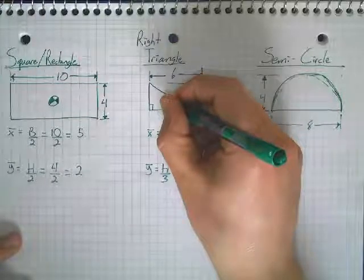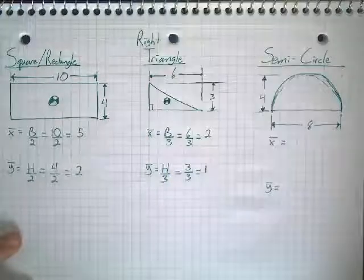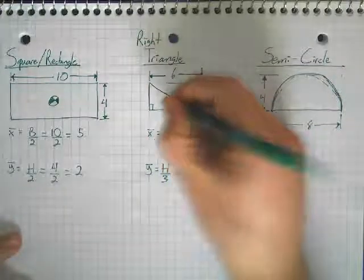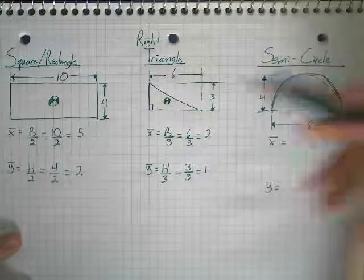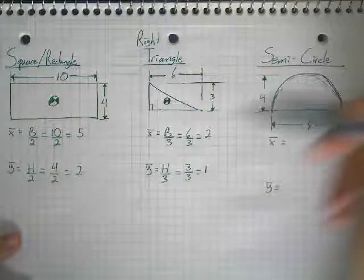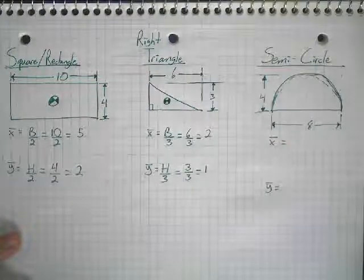Maybe I drew that a little bit better this time than my last one. So, there we go. Practice makes perfect, I guess. All right. So, now we have our rectangle, our triangle. Now, let's do our semicircle.